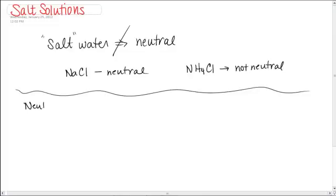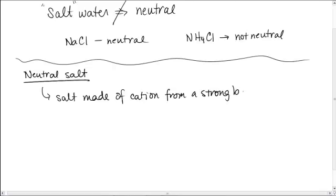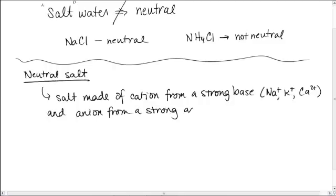So let's just first talk about a neutral salt. In other words, a salt that actually will give you a pH of 7. A neutral salt is a salt, and I'm going to describe this and explain to you what I mean by this, a salt made of a cation from a strong base. So for example, it's got something like sodium, which comes from sodium hydroxide, which is strong. Or potassium, KOH is strong. Or calcium, calcium hydroxide is strong.